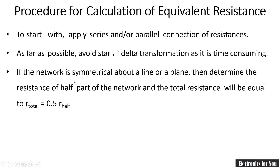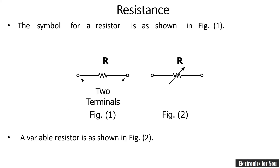If the circuit is symmetrical about a line, we find the equivalent resistance of half the circuit, and the total equivalent resistance will be twice that value. A resistance always has two terminals - a fixed resistance has a constant value, whereas a variable resistance can be adjusted.